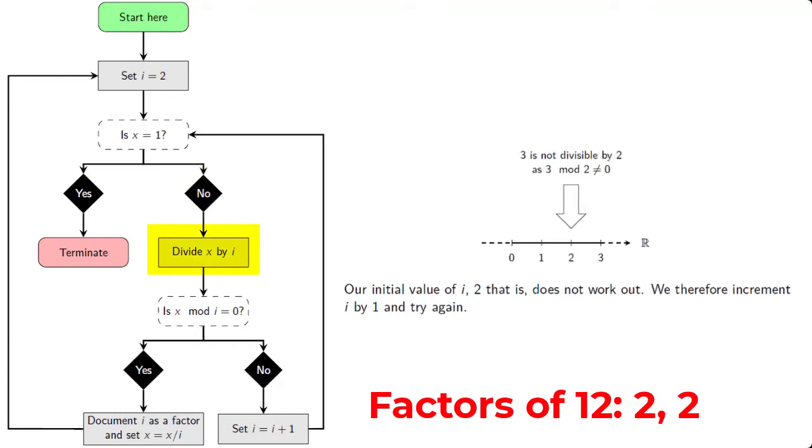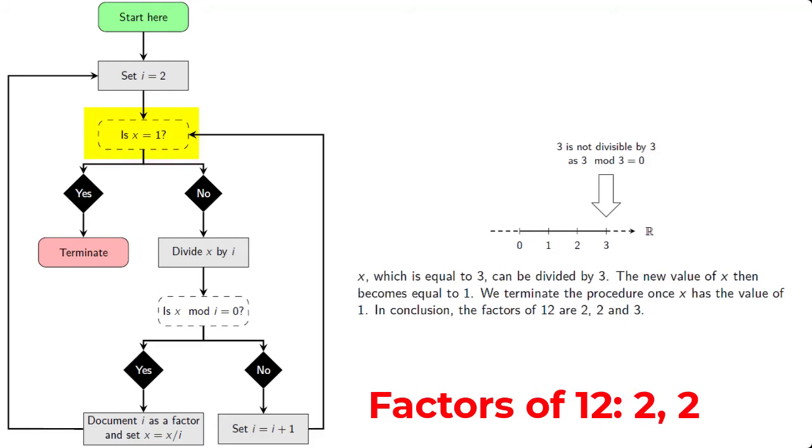We divide x by i, so we divide 3 by 2. And we ask ourselves, is x mod i equal to 0? So in other words, is 3 mod 2 equal to 0? And this time, the answer is actually no. So what we do this time is to set i equal to i plus 1. So we increment i by 1. So instead of i being equal to 2, i is now equal to 3. We then ask ourselves again, is 3 equal to 1? The answer is still no. We divide x by i, so we divide 3 by 3. Is 3 mod 3 equal to 0? And the answer is yes. So we document 3 as a factor. And we set x equal to x divided by i. Or we assign the new value of 3 divided by 3, which is equal to 1, and we assign that to x.